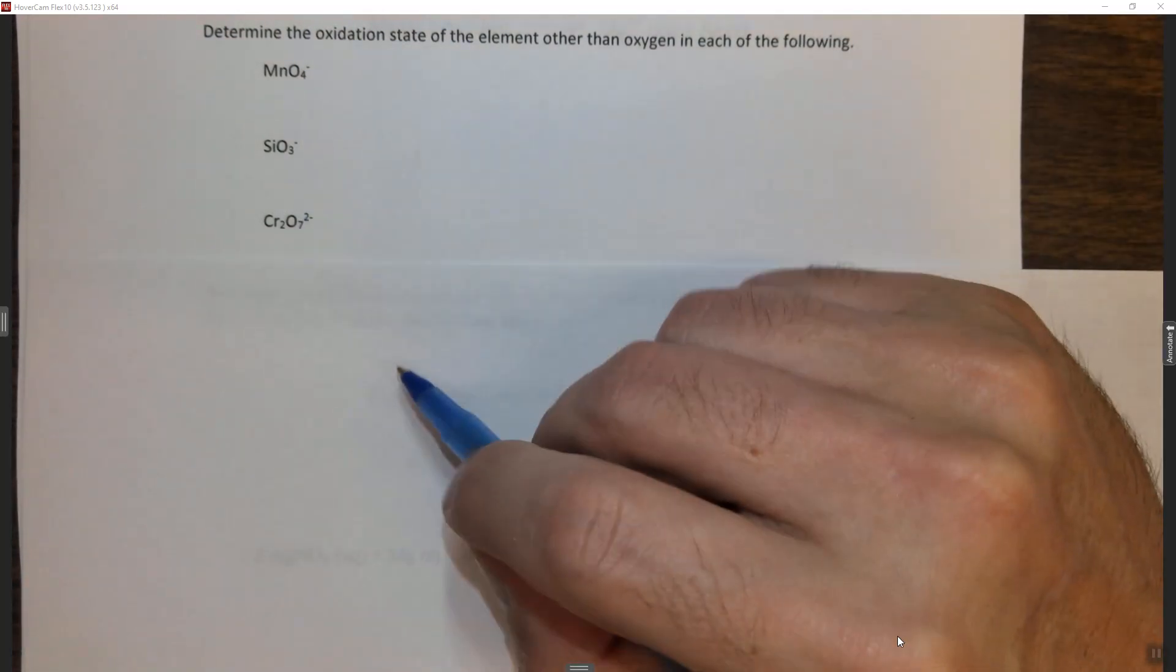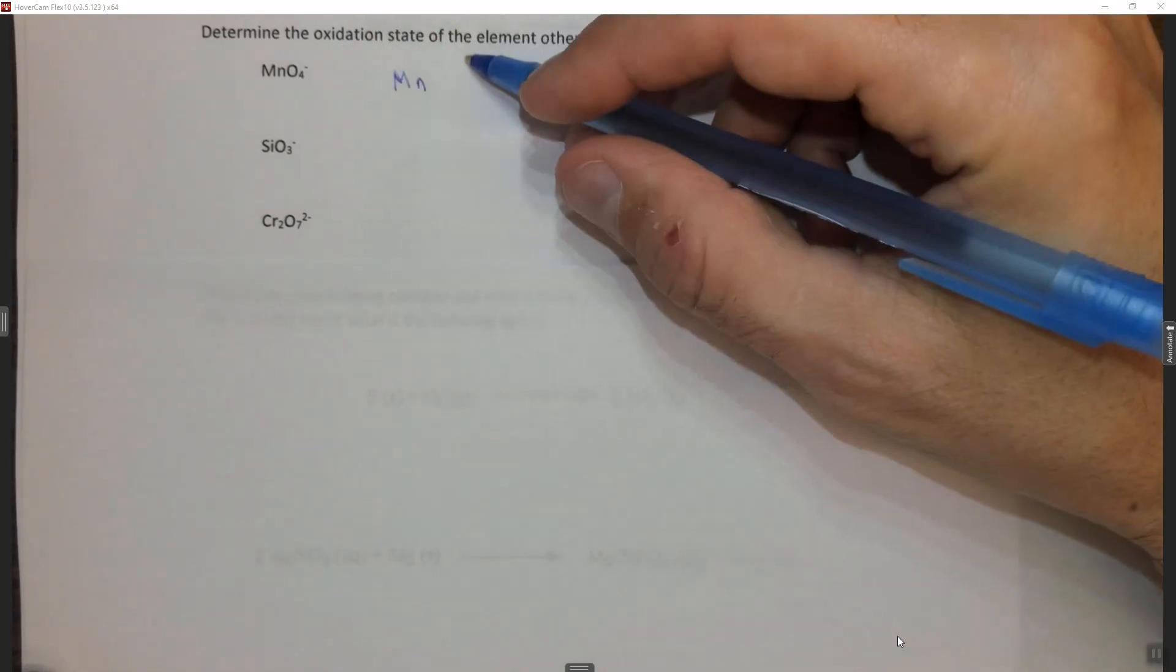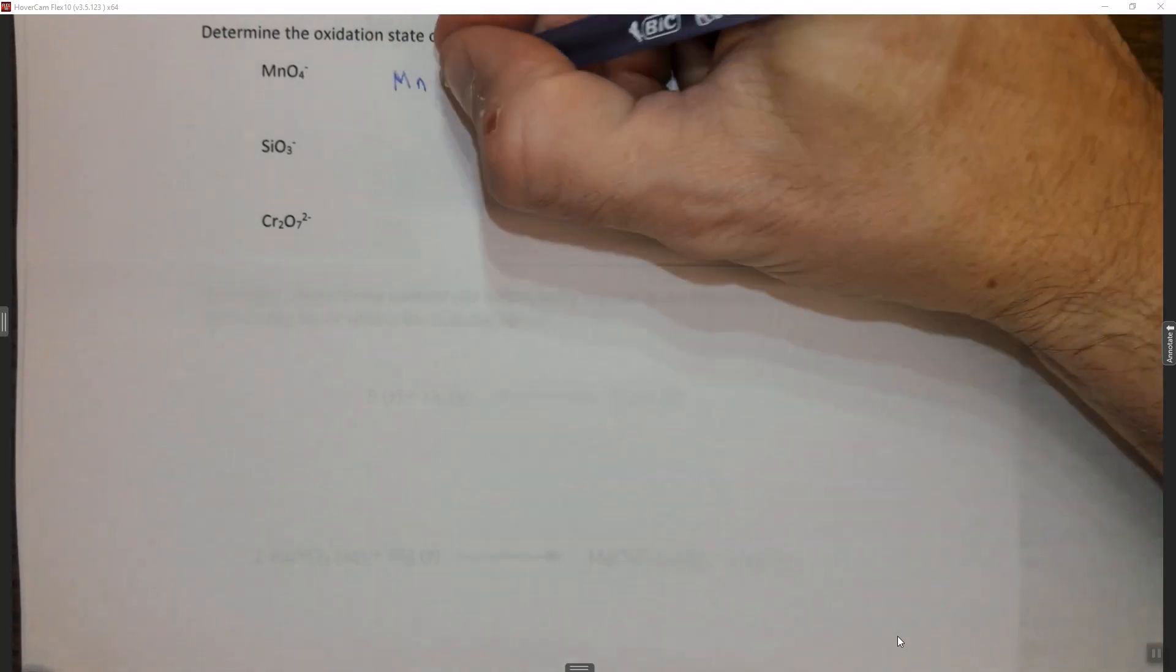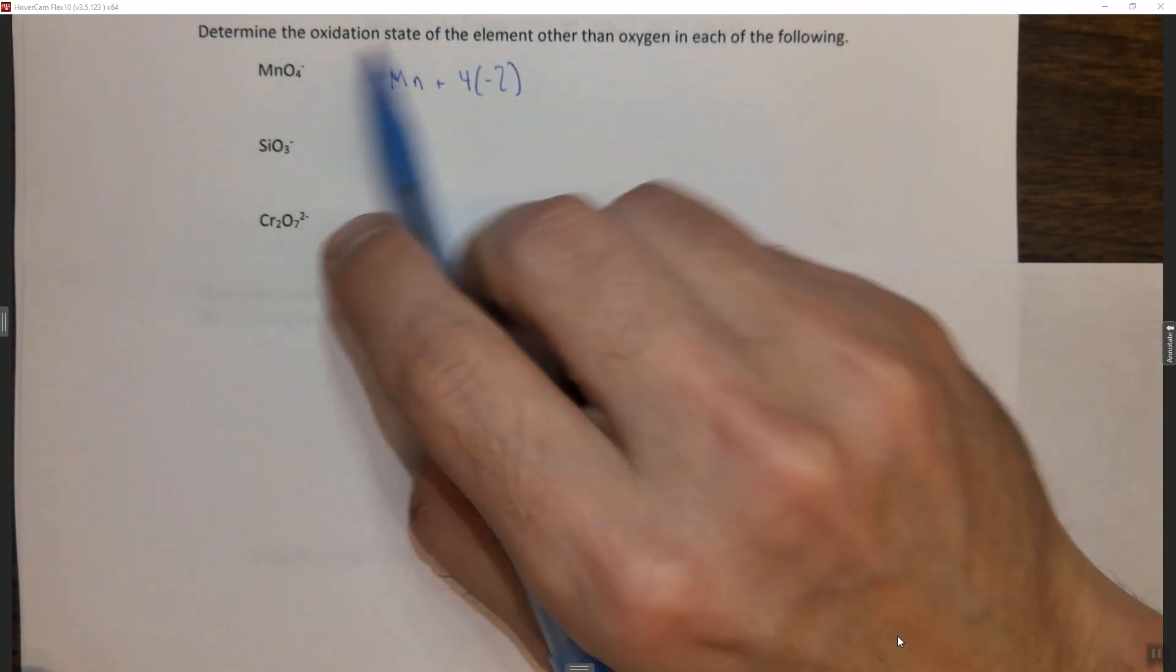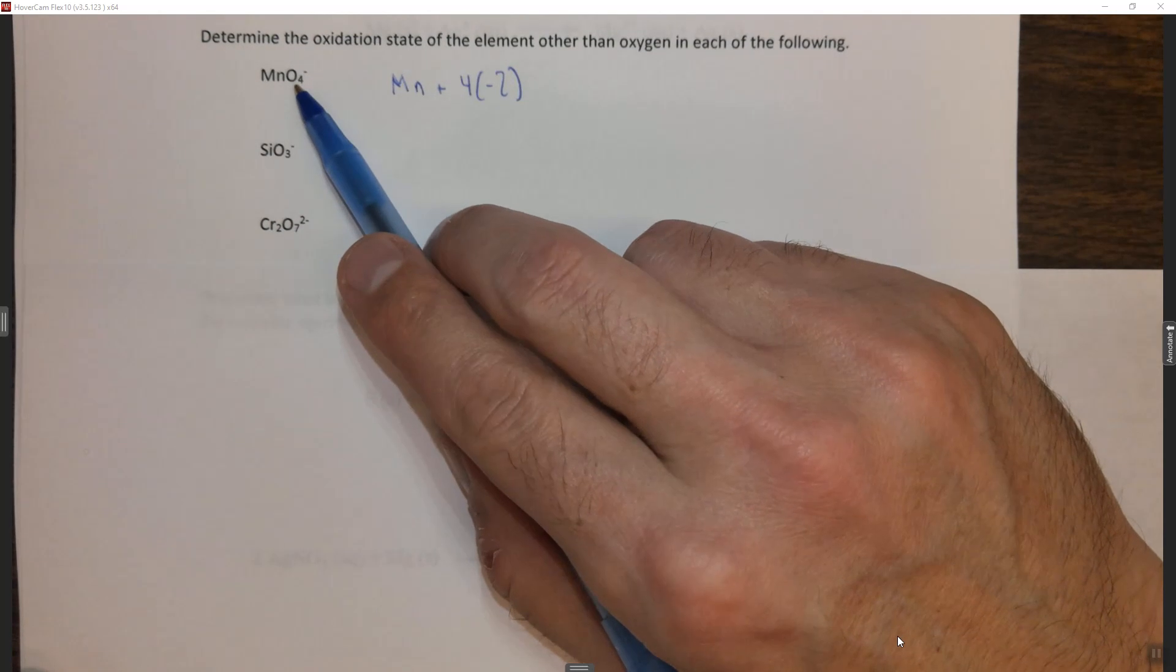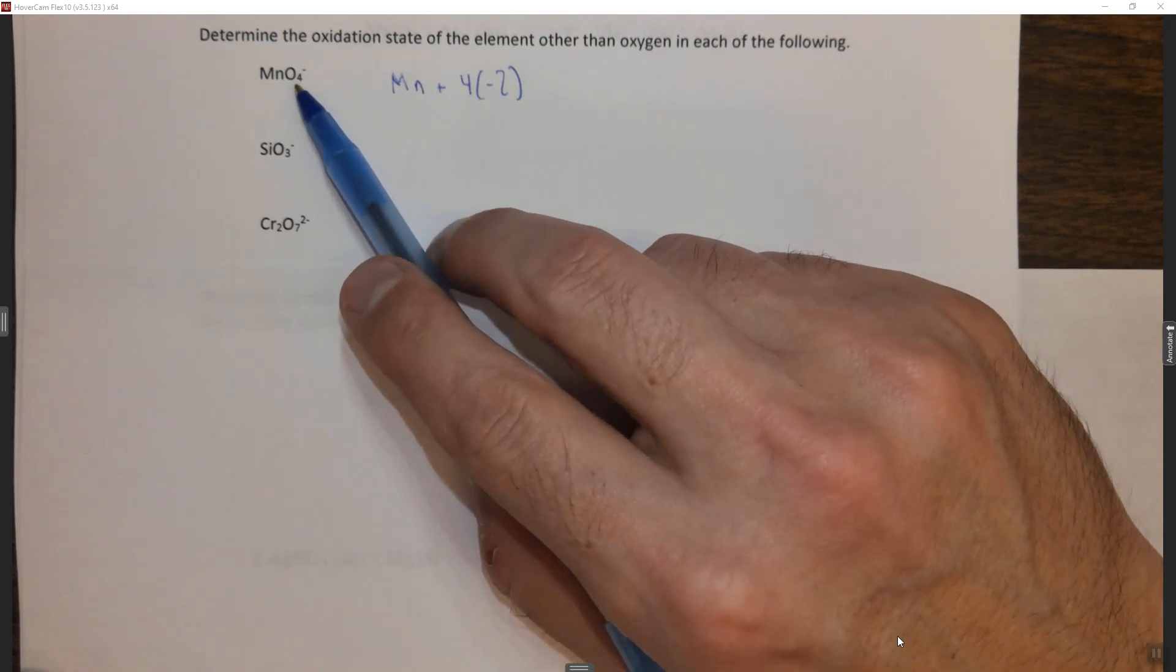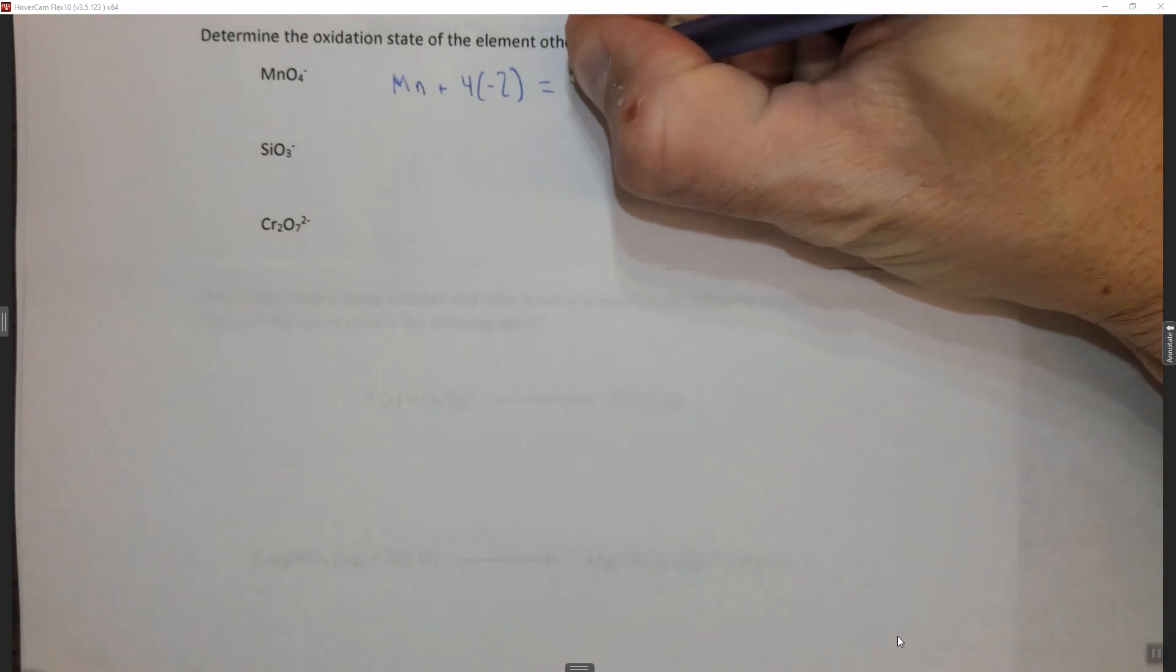This is actually a review from General Chemistry 1. So here manganese, the oxidation state we don't know, the X if you will, plus four times minus two—four oxygens, each with an oxidation state of minus two. Again, oxygen is always minus two in compounds unless it's O2, oxygen gas by itself, where it's zero, equals negative one.